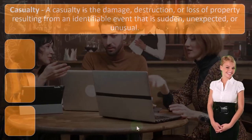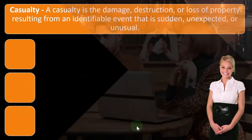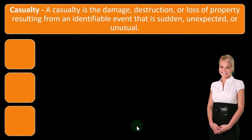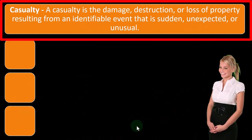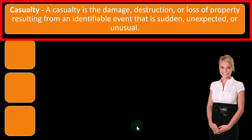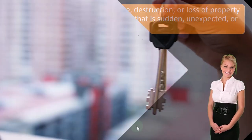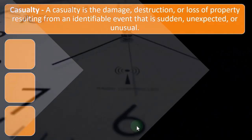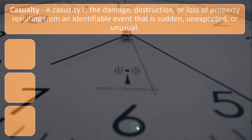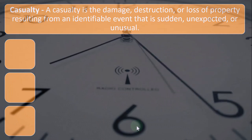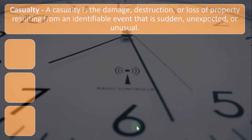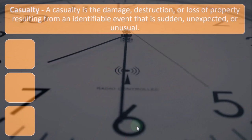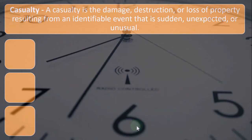Casualty: a casualty is the damage, destruction, or loss of property resulting from an identifiable event that is sudden, unexpected, and unusual. Those are key components. So if your car rusted over 20 years and turned into a pile of rust, that's not a sudden type of event. It should be unexpected — something you would not normally have foreseen.